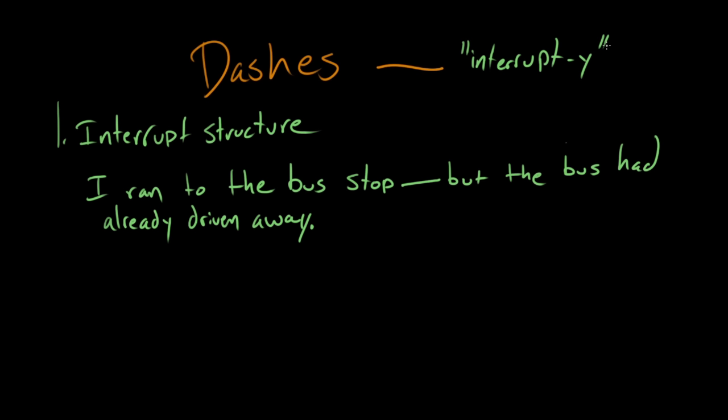Right, so a comma sort of helps the sentence keep flowing, and the dash kind of stops it for a second. And even though grammatically those two sentences are identical, I ran to the bus stop, comma, but the bus had already driven away—even though that means the exact same thing as I ran to the bus stop, dash, but the bus had already driven away—comma but would connect those two independent clauses the same way that dash but is connecting those two clauses. But it has a slightly different connotation. It's just more abrupt in the way that it connects these two things together.